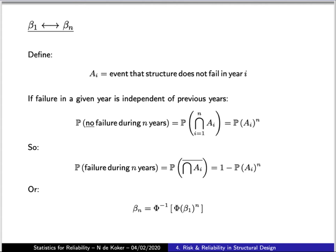So let's say we define an event A_i as the event that the structure does not fail in a given year and will give that year the index i. So i will then go from 1 all the way up to whatever the intended lifetime of the structure is. I'm going to call it n. Very often this is like 50 years or 100 years.